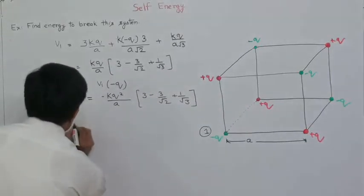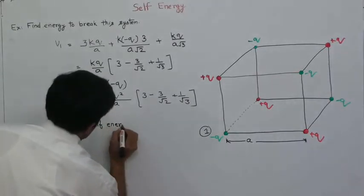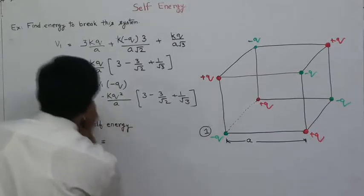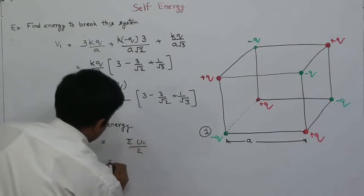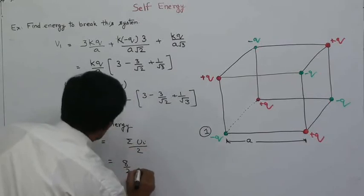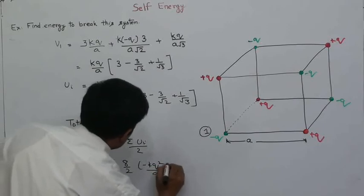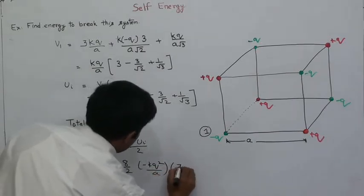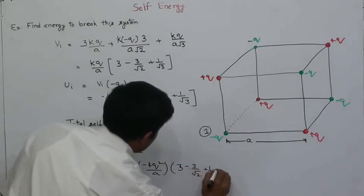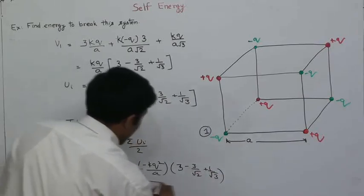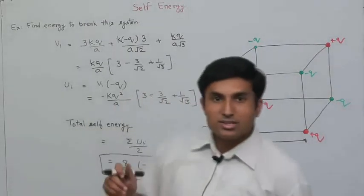So total energy is equal to 8 by 2 times minus Kq squared by a times (3 minus 3 by root 2 plus 1 by root 3). This is the amount of work that you have to do to break this system.